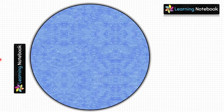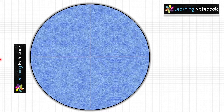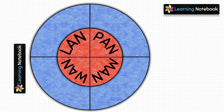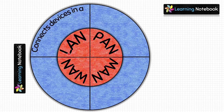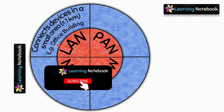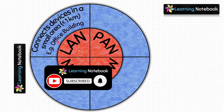Now take the blue circle and fold it vertically as well as horizontally. Place the red circle on top of the blue circle and make sure to match their centers. We are going to write more about these networks on this blue circle. LAN connects devices in a small area of less than one kilometer. We usually set up LAN in schools, homes, and offices — for example, office buildings.